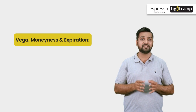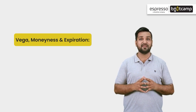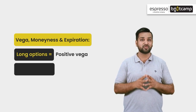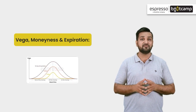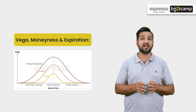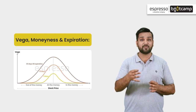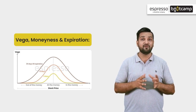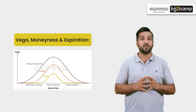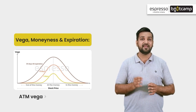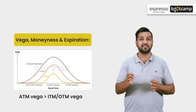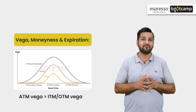Now let's talk about Vega, moneyness and expiration. Option buyers assign a higher premium for contracts that expire after a long period. Due to further expiry, uncertainty rises and therefore Vega also rises. So for option contracts closer to expiry, Vega is lower. An at-the-money option contract has the highest Vega, while contracts that are in-the-money or out-of-the-money have lower Vega.